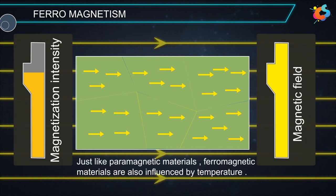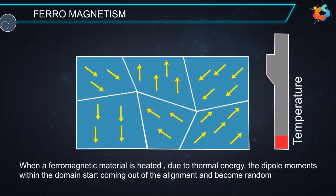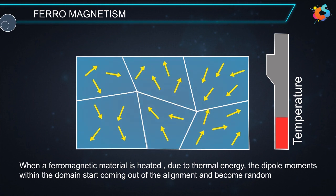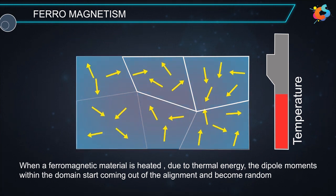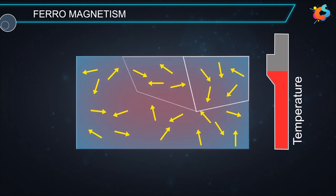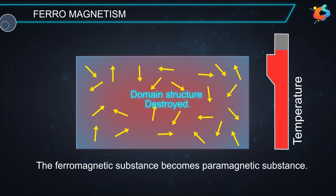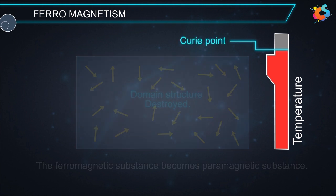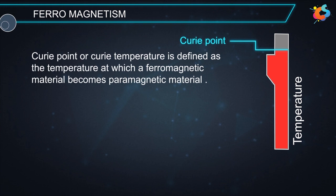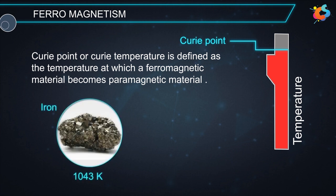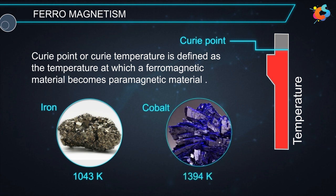Just like paramagnetic materials, ferromagnetic materials are also influenced by temperature. When a ferromagnetic material is heated, the thermal energy causes the dipole moments within the domains to come out of alignment and become random. The randomization goes on increasing until, at a particular temperature, the domain structure becomes completely destroyed and the ferromagnetic substance becomes paramagnetic. This particular point is called the Curie point. The Curie temperature is defined as the temperature at which a ferromagnetic material becomes paramagnetic. The Curie temperature of iron is 1043 K and for cobalt is 1394 K.